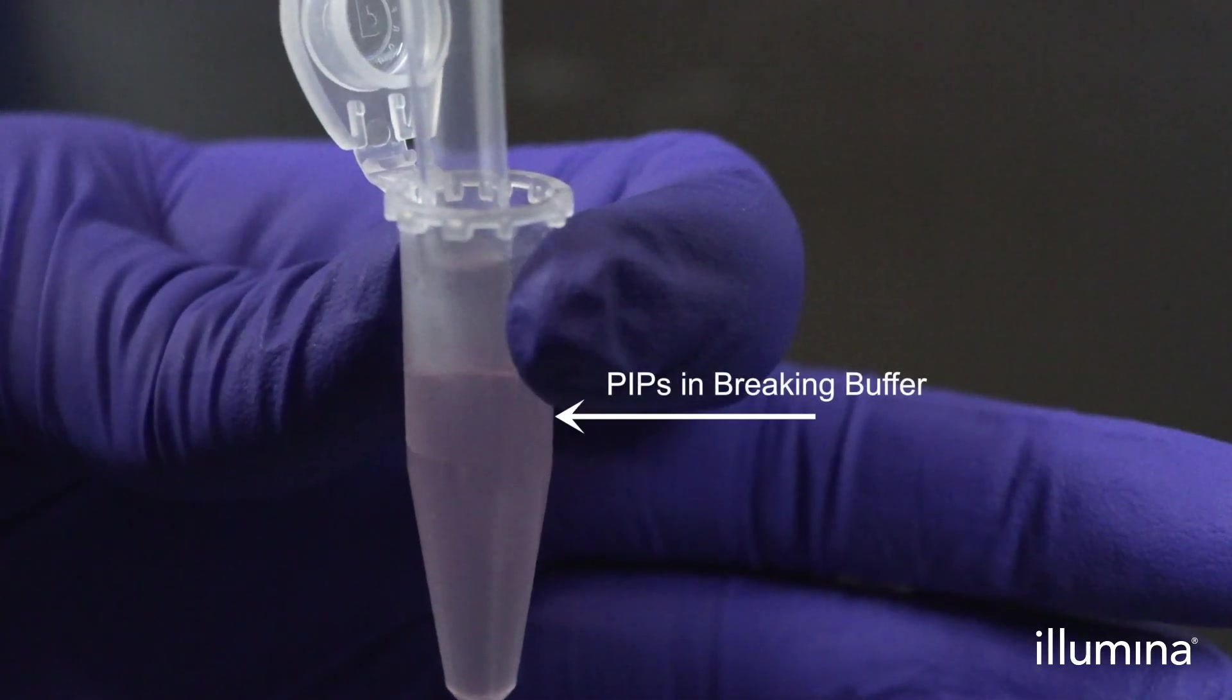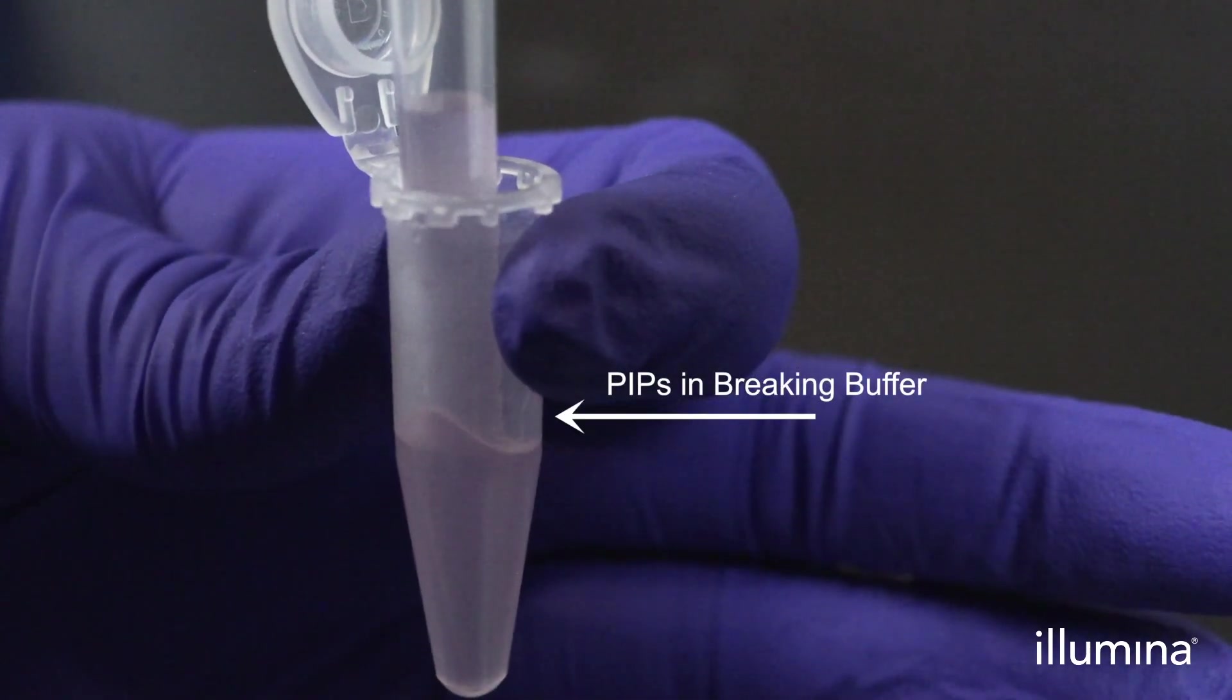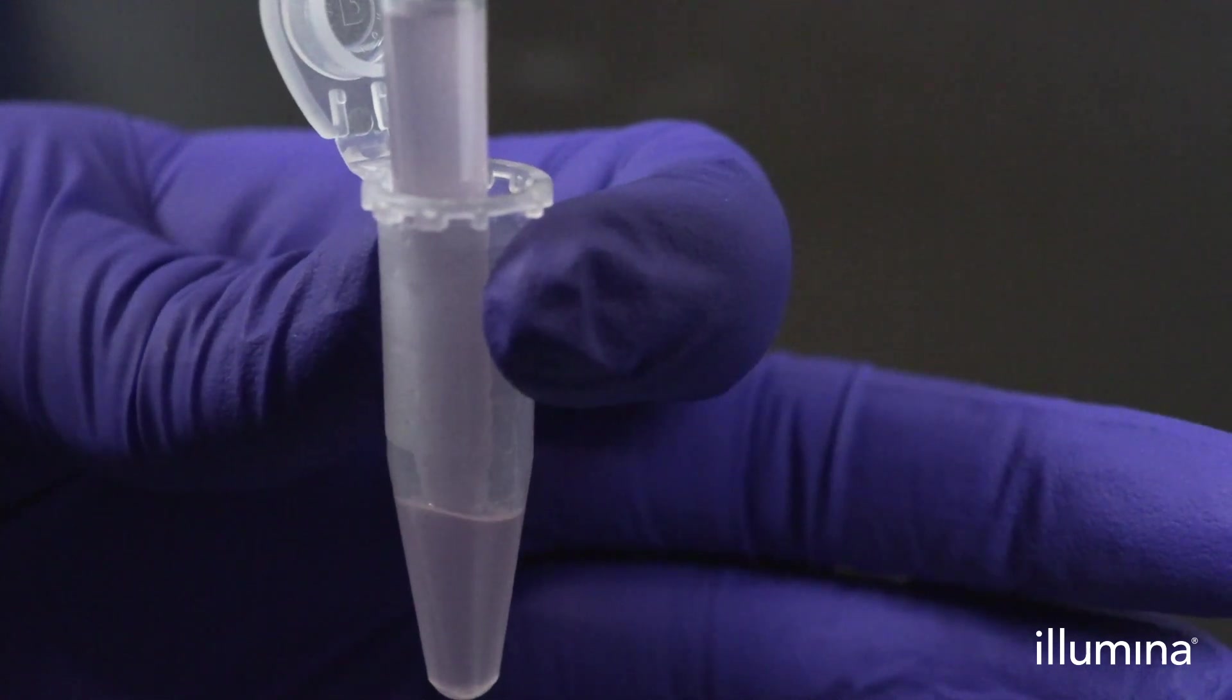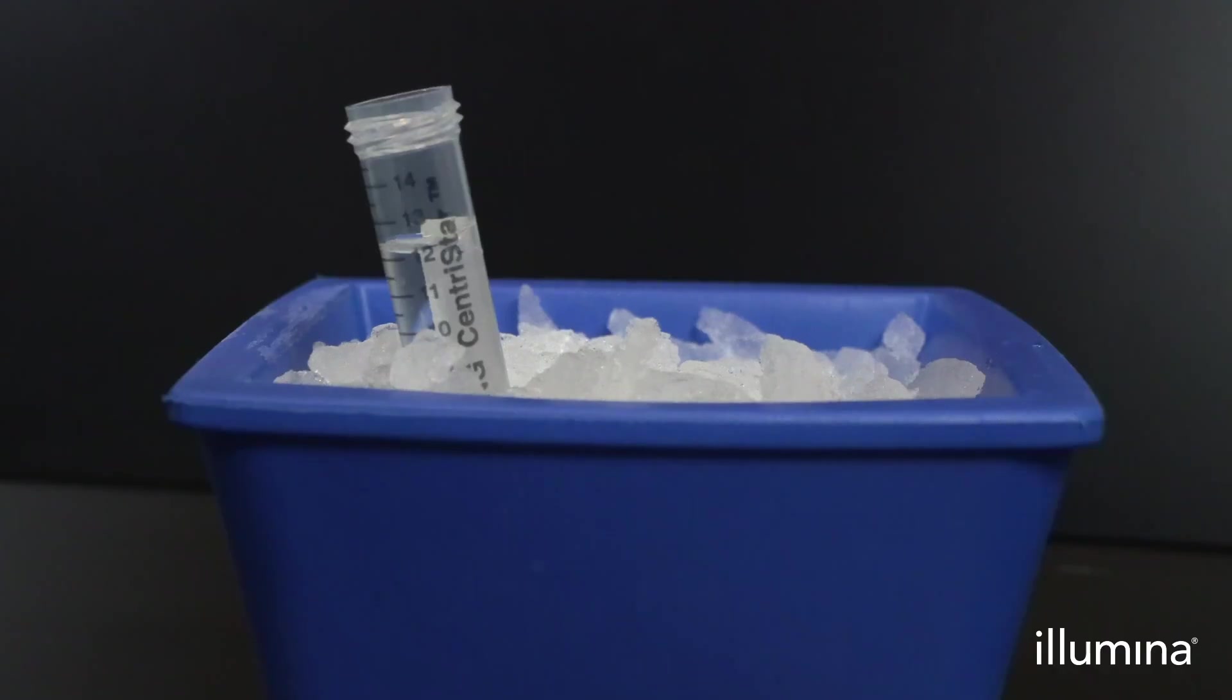With the P1000 low retention tip, slowly aspirate the pips from the 1.5 ml sample tube and transfer that volume into one of the 1x wash buffer aliquots in the 15 ml tubes. Briefly centrifuge the remaining volume in the 1.5 ml sample tube on a benchtop microcentrifuge to bring the liquid down to the bottom of the tube.